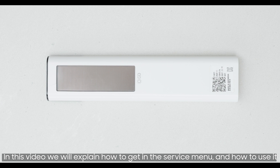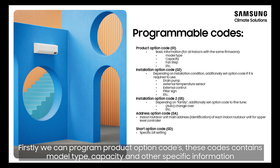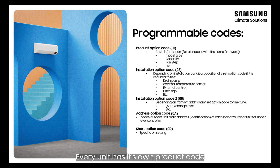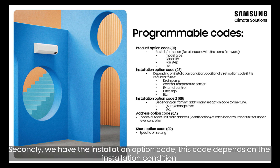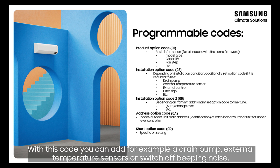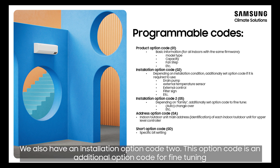In this video we will explain how to get into the service menu and how to use it. Firstly, we can program product option codes — these codes contain model type, capacity, and other specific information. Every unit has its own product code. Secondly, we have the installation option code. This code depends on the installation condition; with this code you can add, for example, a drain pump or external temperature sensors, or switch off beeping noise.